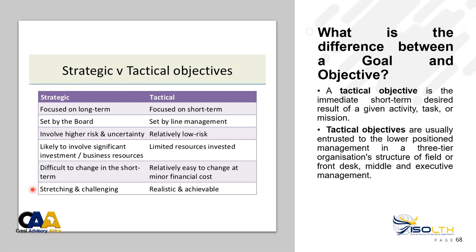Strategic objectives are difficult to change in the short term because you have a three-to-five-year horizon. What can change is typically at the tactical and operational levels. Strategic objectives must also be stretching and challenging — you should put yourself in a space where you are looking at continuous improvement. For example, planning a 10, 15, or 20 percent increase in profits, or implementing a new revenue stream, which requires a business plan, correctly described strategic objectives, and project management of every step.